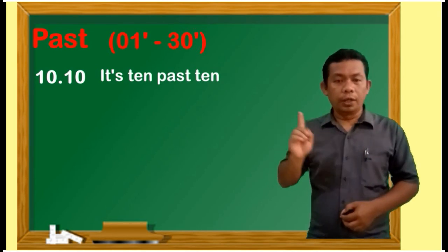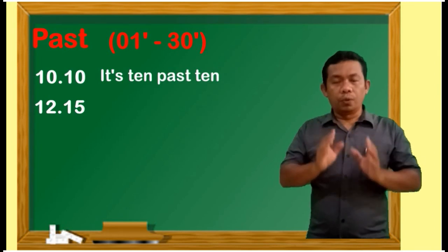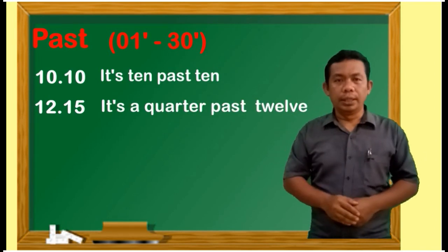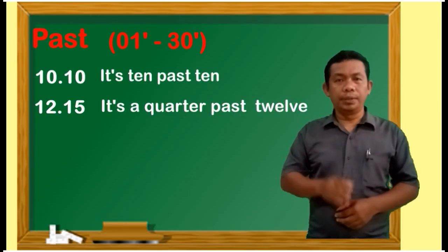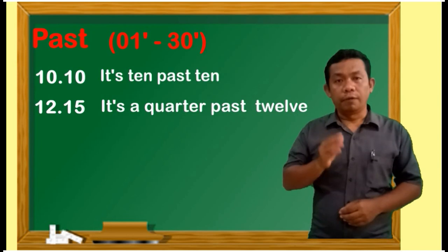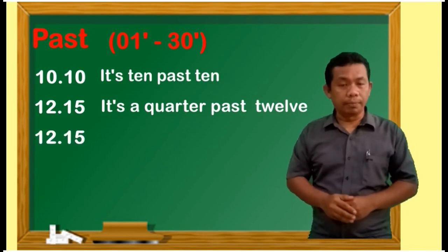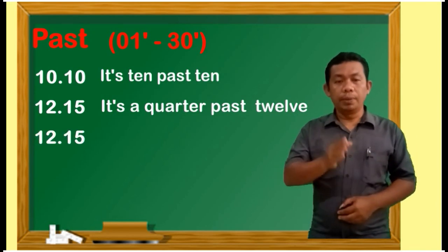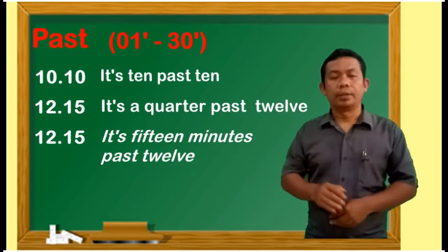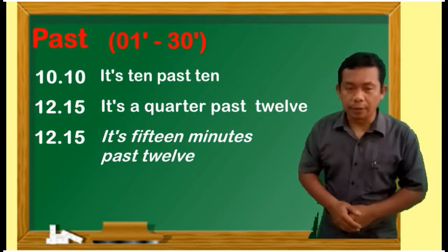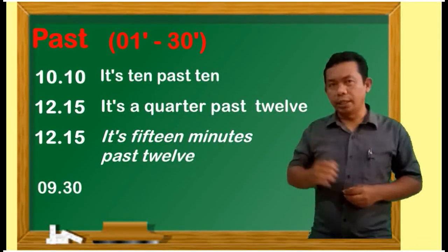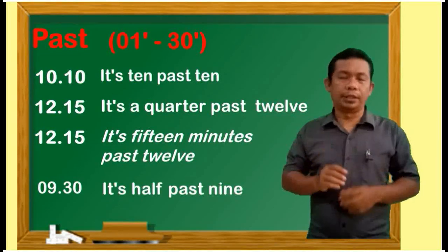Jam 12 lewat 15 — 'It's a quarter past 12.' Angka 15 bisa kita sebutkan dengan 15 minutes, for example: 'It's 15 minutes past 12.' Contoh yang lain, 9.30 — we can say in English 'It's half past 9.'